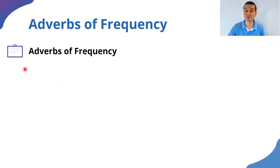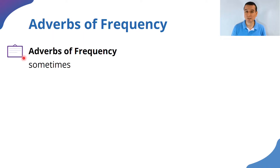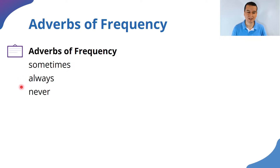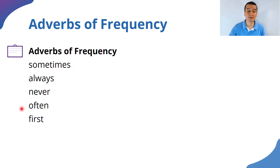Let me show you some adverbs of frequency — words that tell us how often we do something, how frequently we do something. If we don't do it all the time, we say 'sometimes.' If we do it all the time, we use 'always.' If we don't do it at all, we use 'never.' For frequently, we use 'frequently' or 'often' — it is very common to use that word.